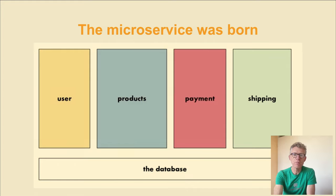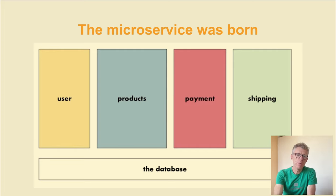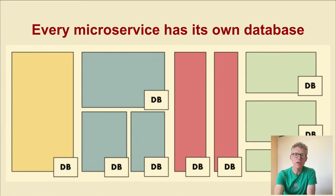So we split up our applications into verticals, also called microservices. The microservices approach was born. We make slices in our application for users, products, payments — slices by use case or business domain. You can see that the microservices here use a general database, but this is not what we want. Every microservice should have its own database.